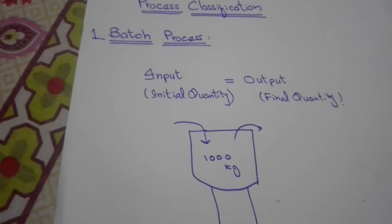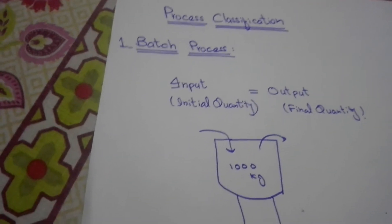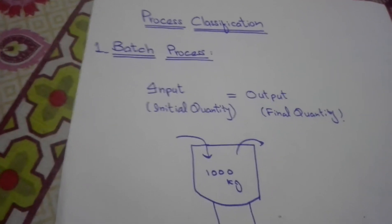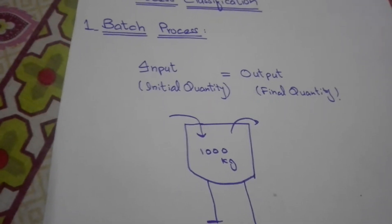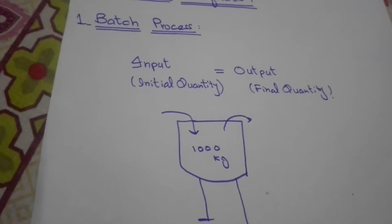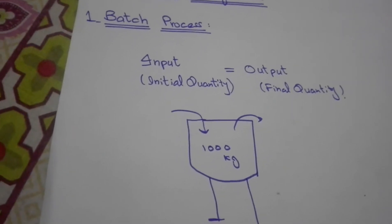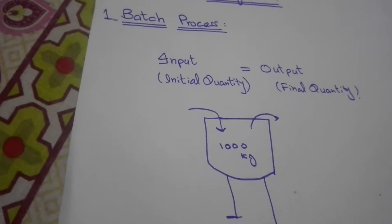We add it one time, then after some time of reaction, we remove it. That is our batch process. Input initial quantity equals output final quantity.